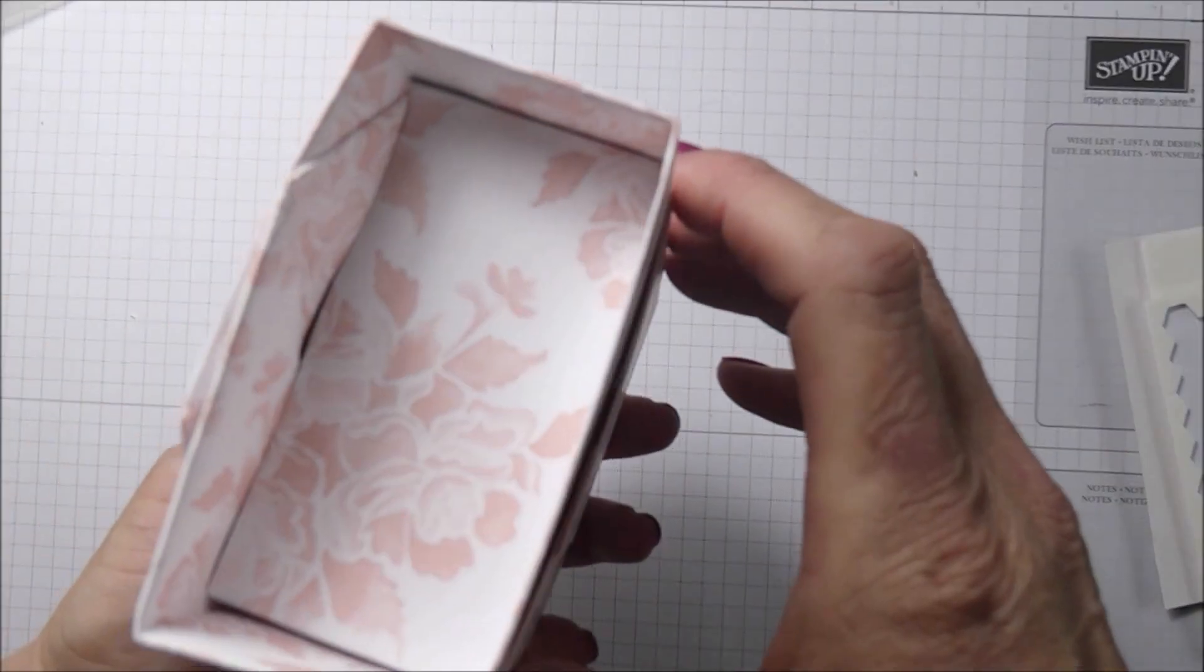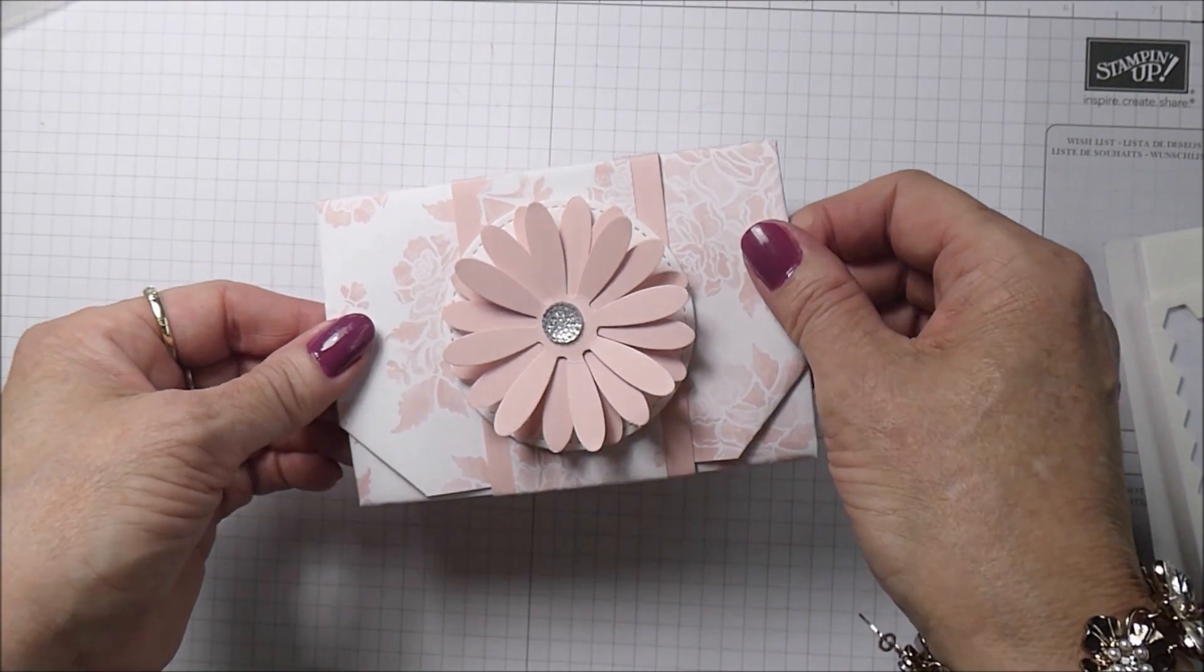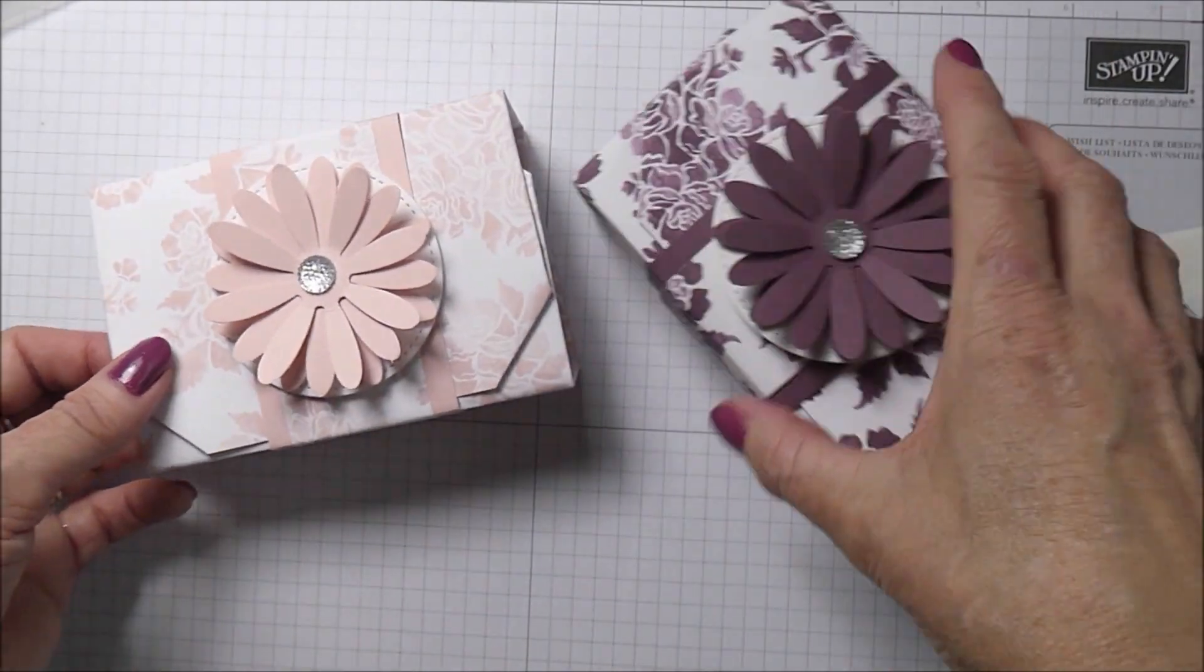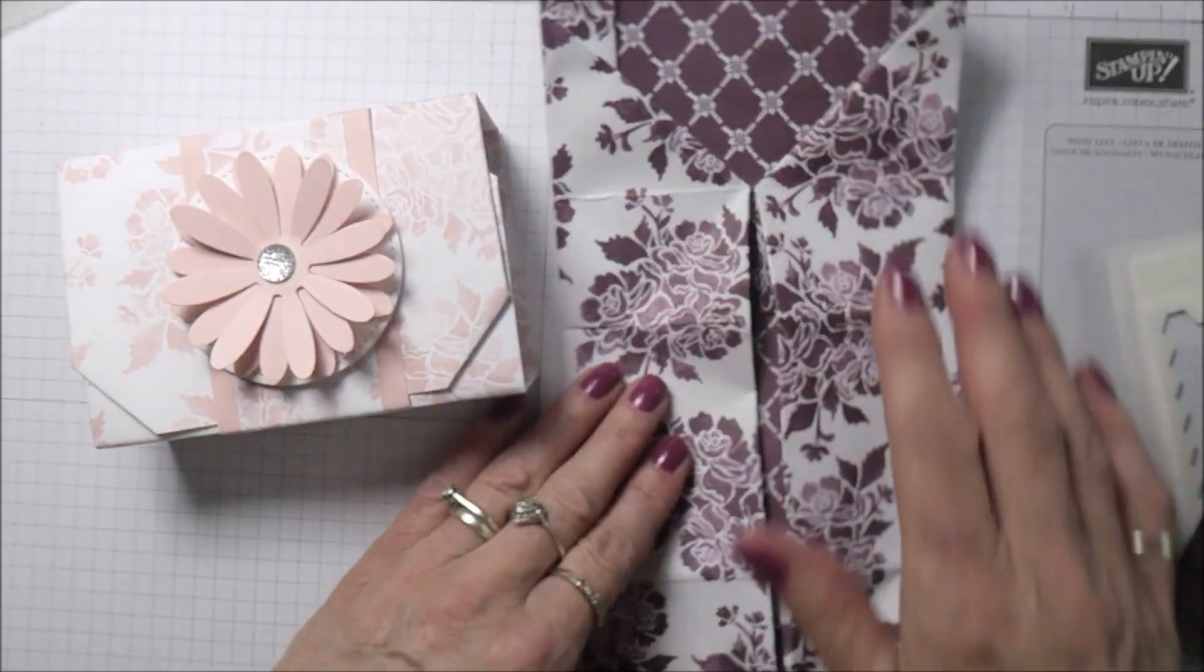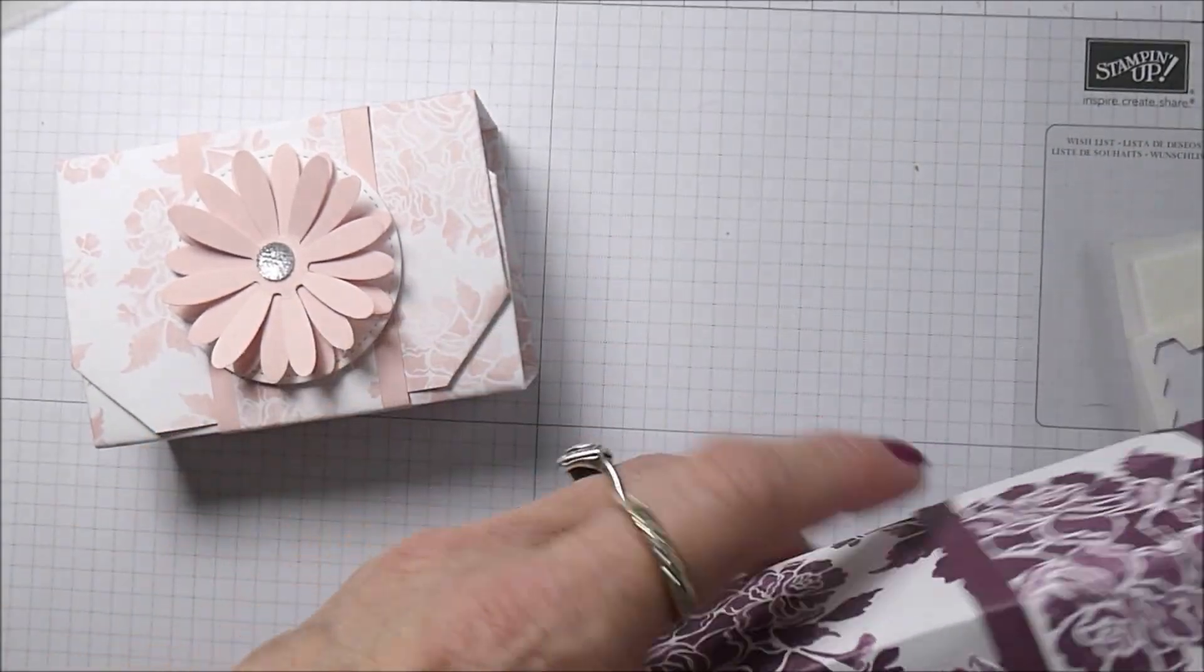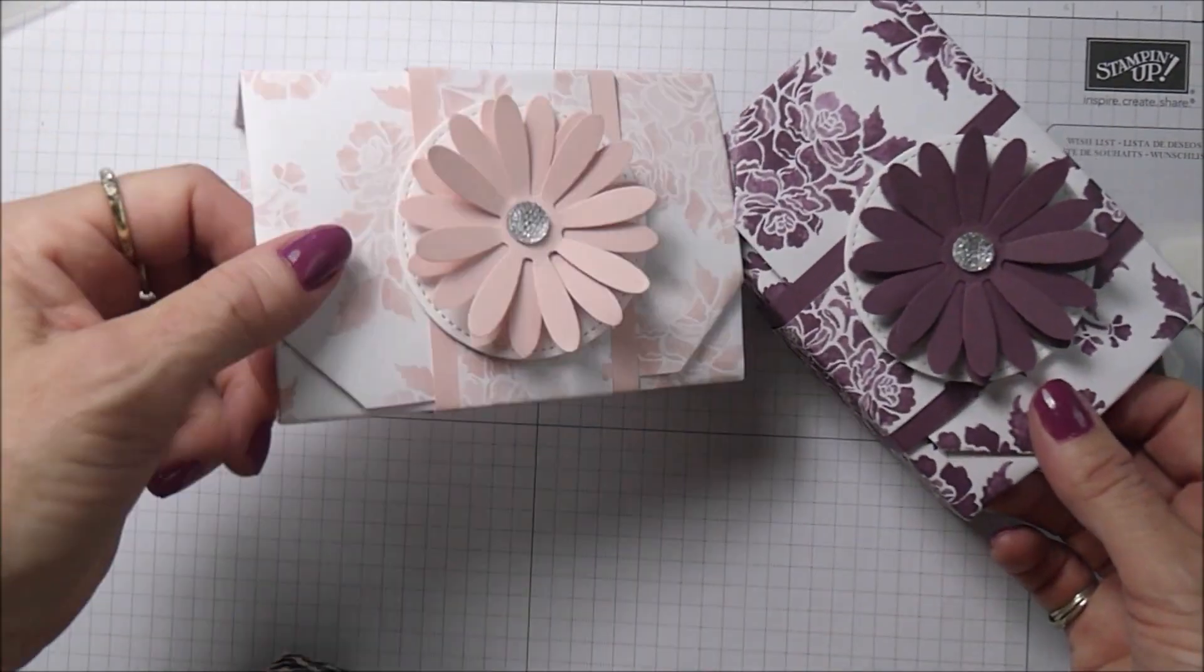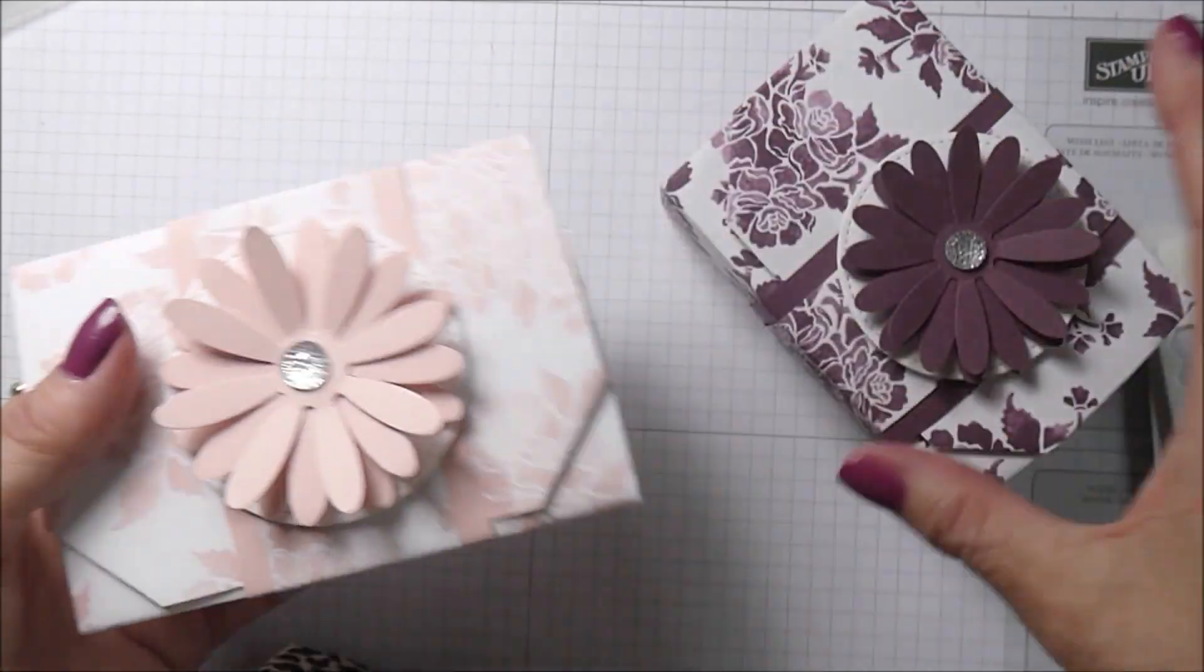There you go. That's just a really pretty way of making a little box which can be folded flat and kept away, or stored away until you need one on another rainy day. You make a stack of them, pop them away. But they really do look very eye-catching once they're assembled, and particularly eye-catching if you're using this particular new punch. I just love the daisy punch.